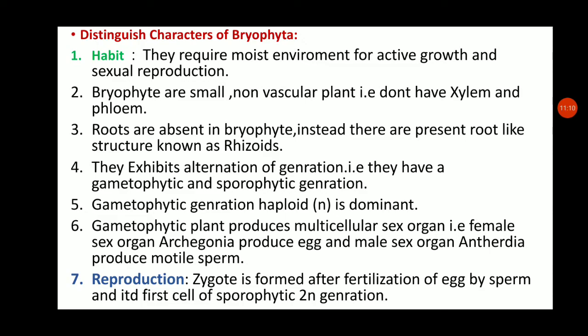When the antherozoids reach the archegonium, the cover cells open and the neck canal cells and ventral canal cells disintegrate. Fusion of male and female gametes takes place. After fertilization, a diploid zygote is formed, which is the first cell of the sporophytic (2N) generation.